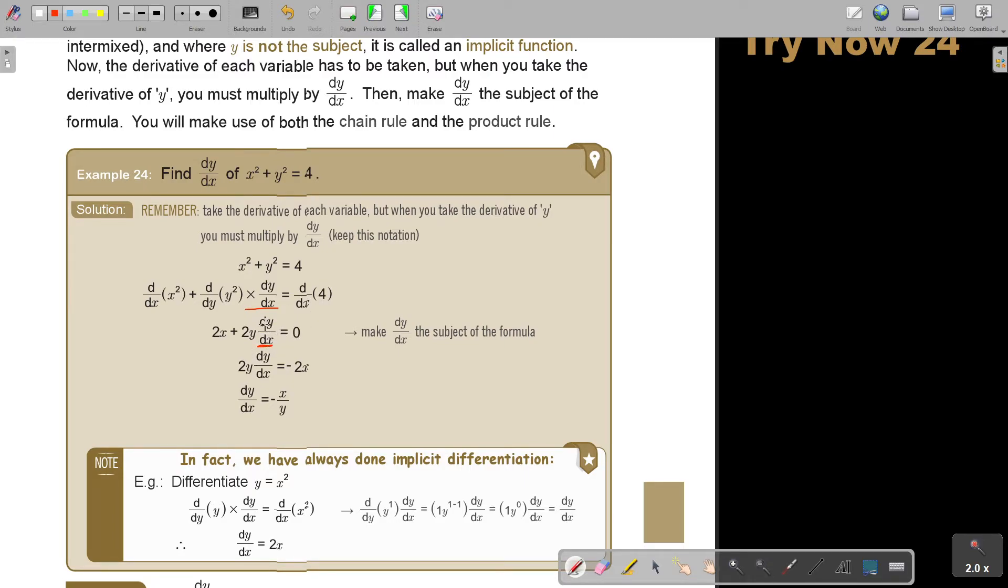And now I said, make dy over dx the subject of the formula. So take that 2x over. Then it becomes negative 2x. And then you divide by 2y both sides. And remember, 2y divide negative 2x. The 2s cancel. And it's negative. Sorry, my order was not correct there. It was negative 2x divide by 2y. And then it was negative x over y.